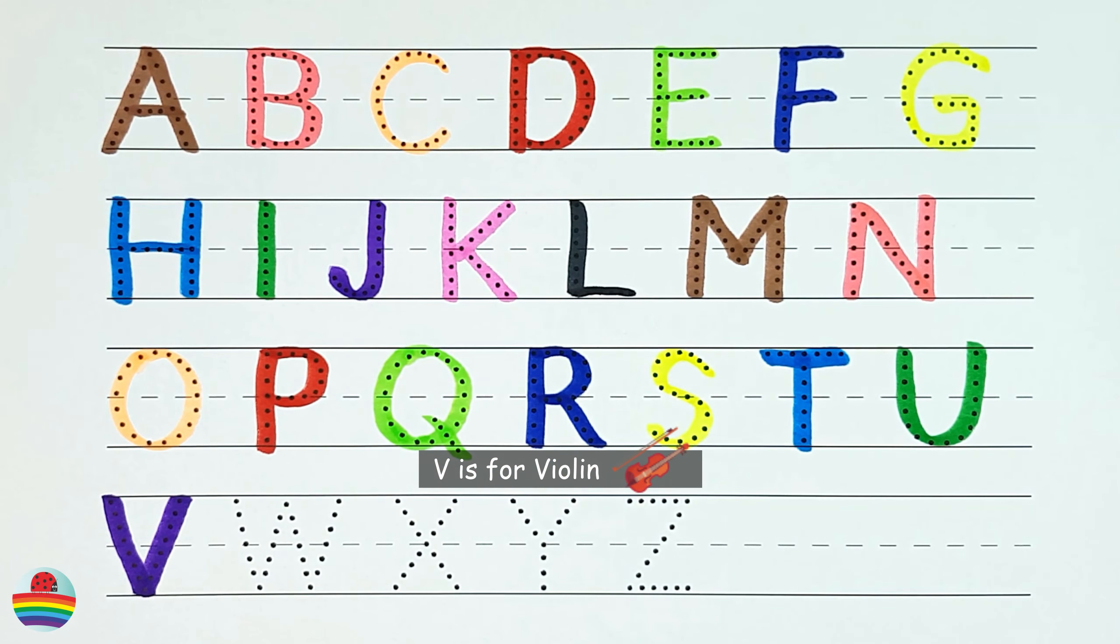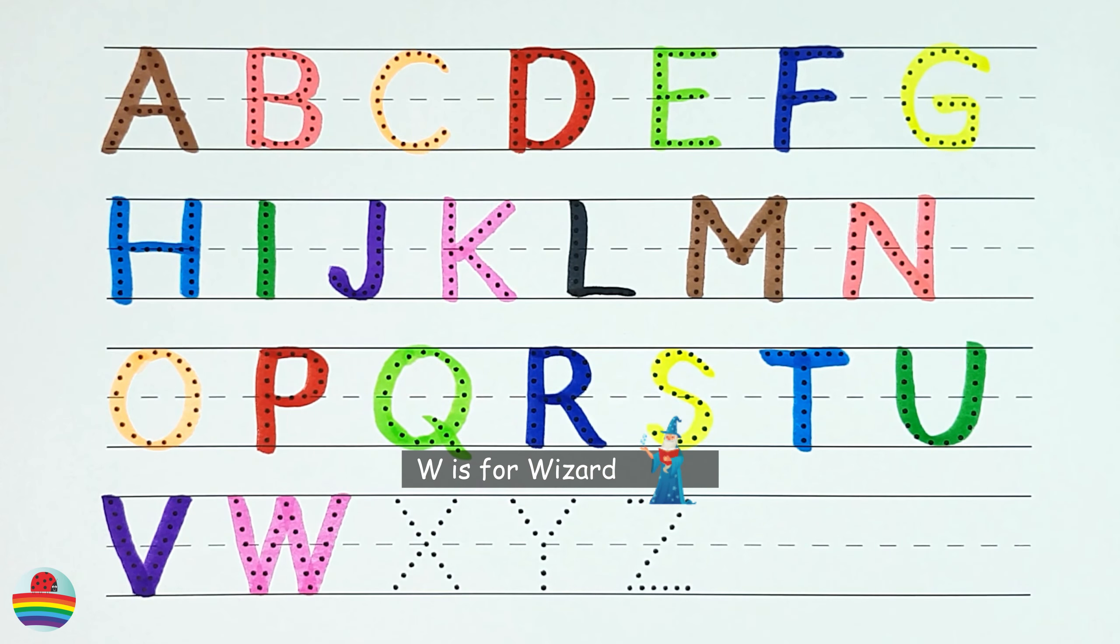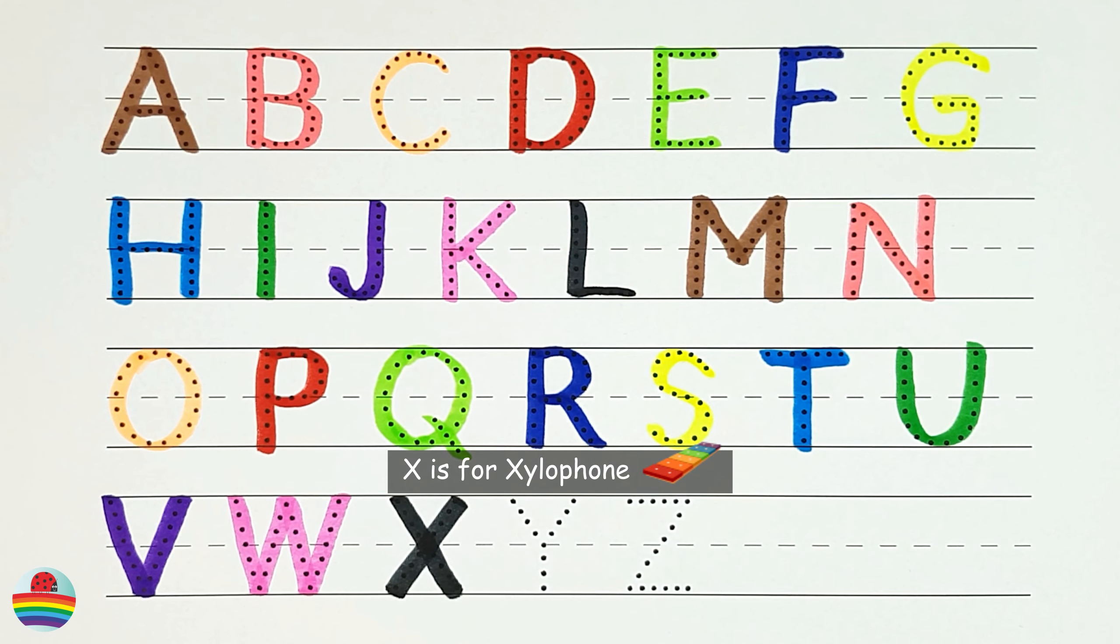V. V is for violin. W. W is for wizard. X. X is for xylophone.